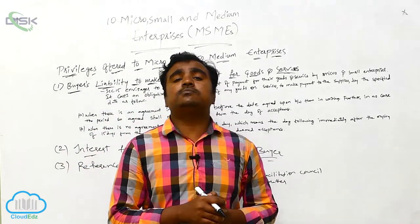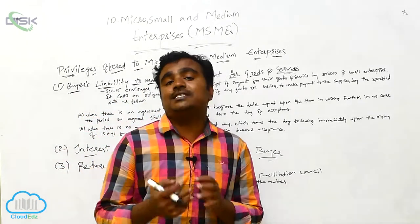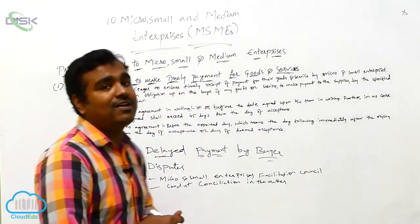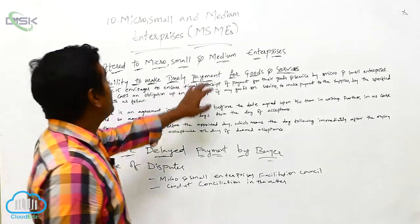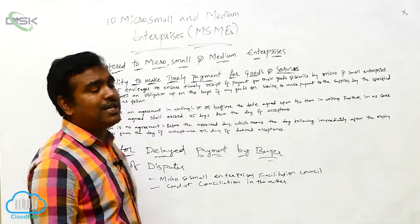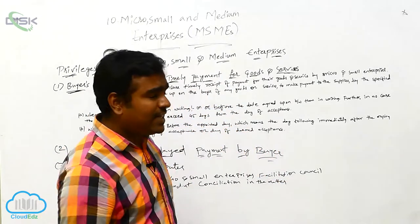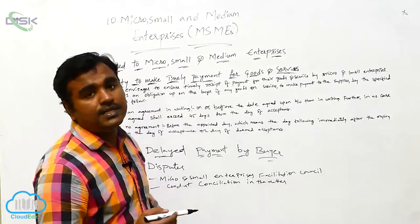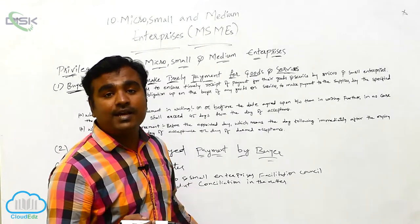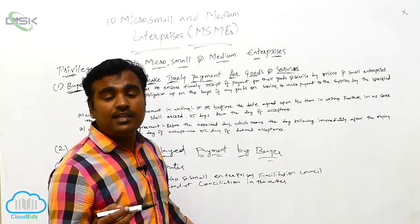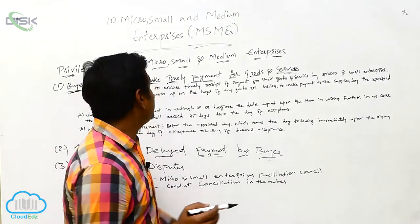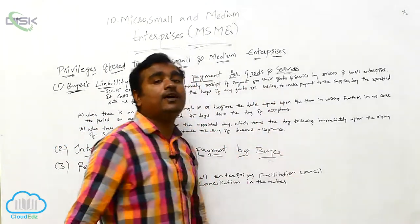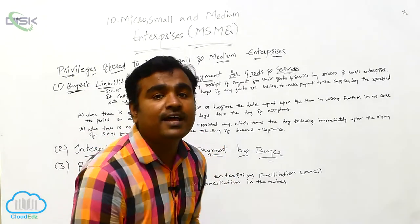The act has also given some special privileges regarding agreements or purchase and selling agreements. We will learn about three types of privileges. The first one is buyer's liability — when they buy anything they are under liability. So when they purchase goods and services on credit, they are definitely liable. This is buyer's liability to make timely payment for goods and services.